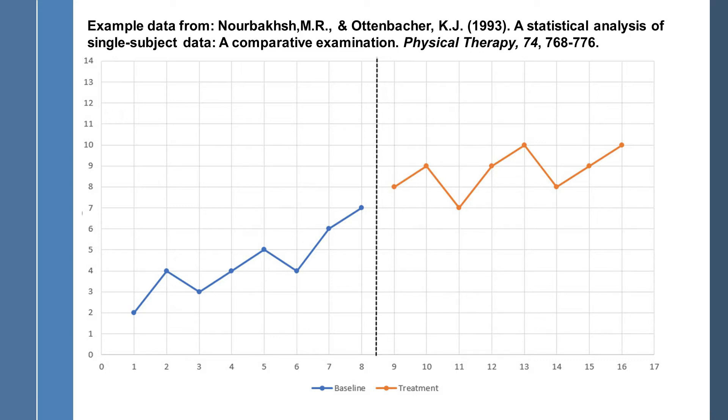Now if you just look at the PND, or percentage of non-overlapping data, the PND here is going to be very high because there's only one tie at the score of seven. And in the treatment phase you have eight scores total, seven of which are above the highest value in baseline.